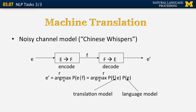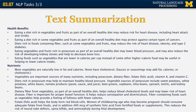We'll talk about machine translation in much more detail towards the end of this course. Another task in natural language processing is text summarization, which can take two different forms. In one case, you have a single document and want to produce a short version — for example, to display on a mobile device or process through a text-to-speech system. The second form is known as multi-document summarization.